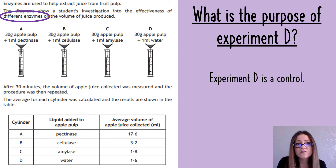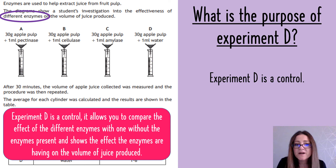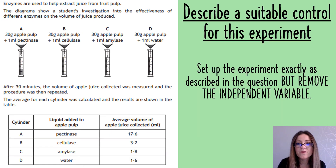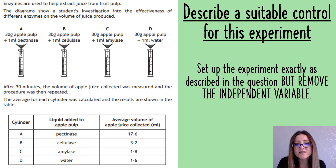For a control, you remove the enzymes and have one that doesn't have any enzymes, to show that without enzymes, not as much juice is produced. Experiment D is a control - it allows you to compare the effectiveness of the different enzymes with one that doesn't have enzymes present, showing the effect the enzymes are having on the volume of juice produced. Alternatively, they can ask you to describe a suitable control where it wasn't included.